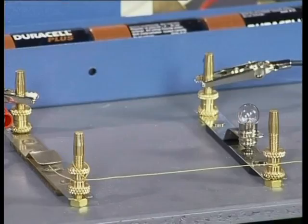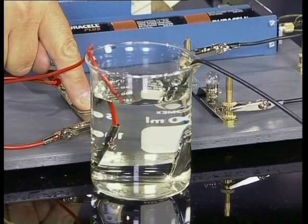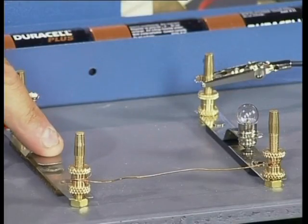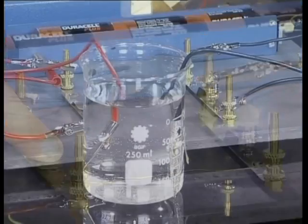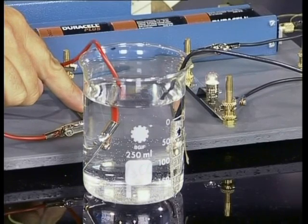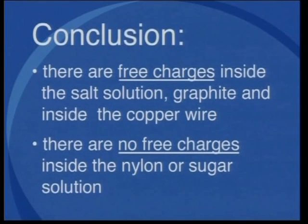So after this, what can we conclude from this experiment? Firstly, some materials like nylon and sugar solution do not conduct electrical current, while others do. Secondly, those materials that conduct electric current must have charge inside them which is able to move when connected to a battery in a circuit. So there are charges that are free to move inside the salt solution, the graphite and inside the copper wire. These are called free charges. There are no free charges inside the nylon or sugar solution — the charges inside those materials are not free to move.